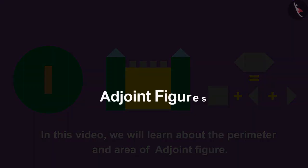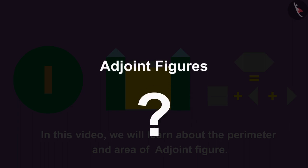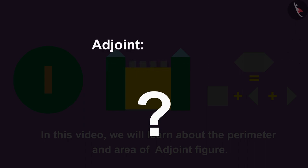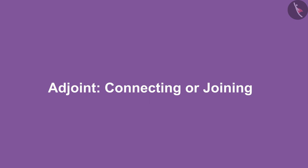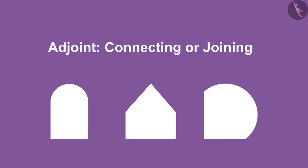Now the question is, what are adjoint figures? If we pay attention to the word adjoint, we know that this means by connecting or joining. So we can say that the shapes in which we can see more than one basic figure like square, rectangle, triangle etc. are called adjoint figures.